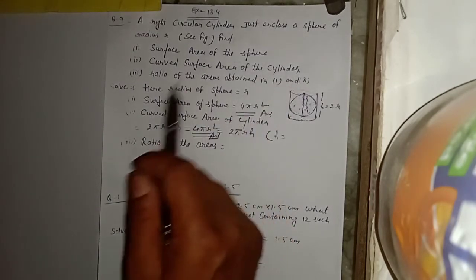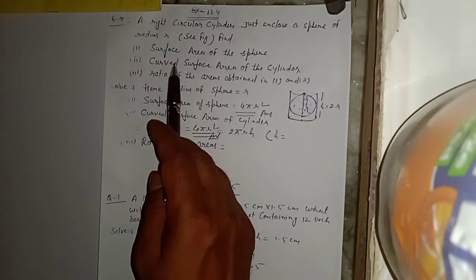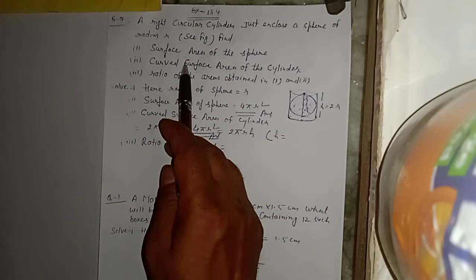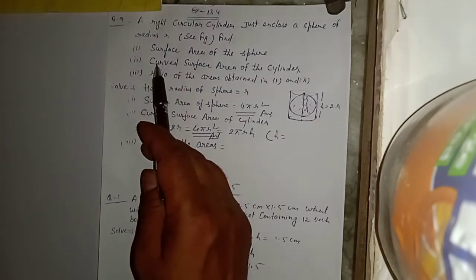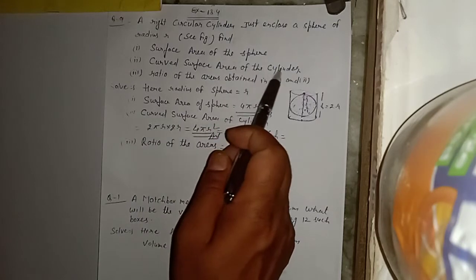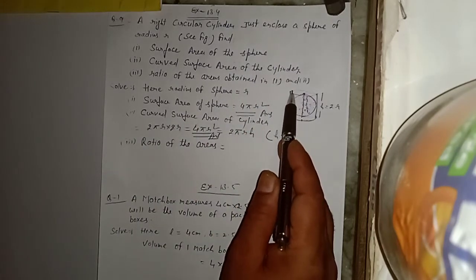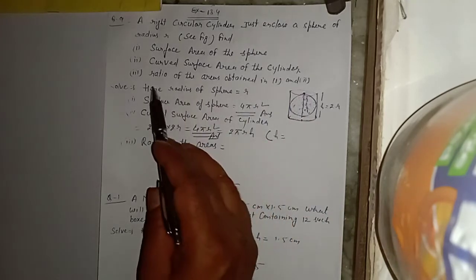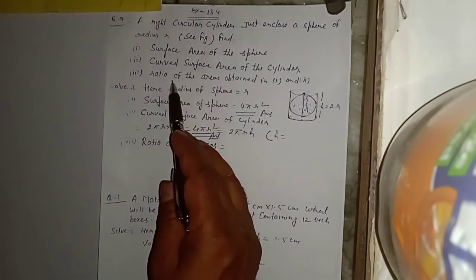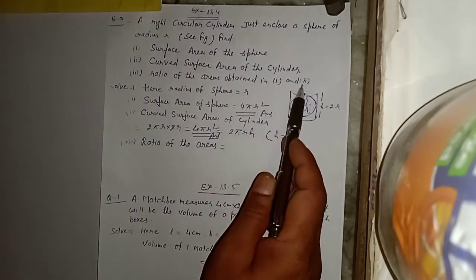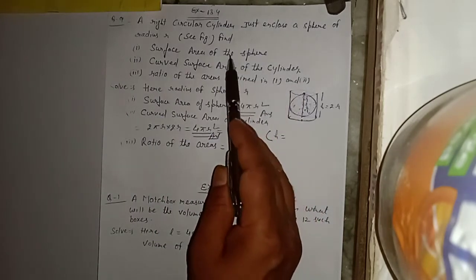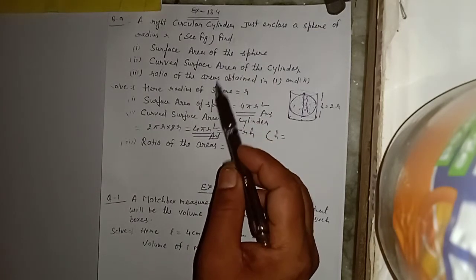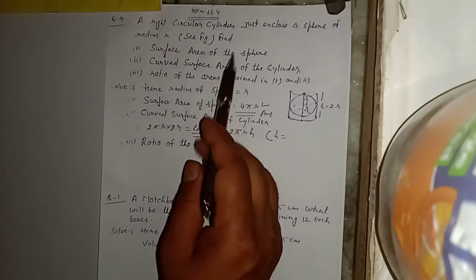यानि पहले part में surface area of sphere निकलना है। दूसरे part में curved surface area of cylinder — जो figure दिया है उस cylinder का curved surface area find करना है। और तीसरे में first और second का जो area निकलेगा उनका ratio find करना है।